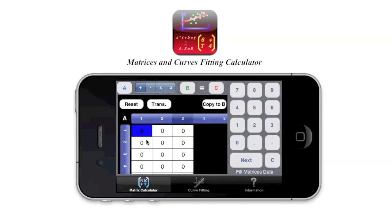Let's just do a three by three. Here you have some buttons. Basically you can reset everything. You can transpose and you can copy to B. Here you have matrix A, matrix B, and matrix C, which is the result. And then we have here basic operations: we have the addition, the subtraction, the multiplication, and solve the system.